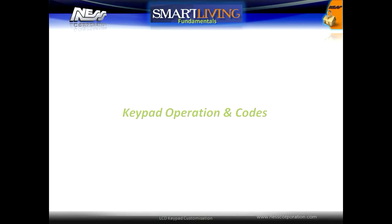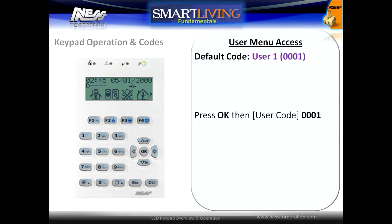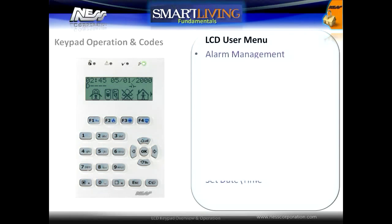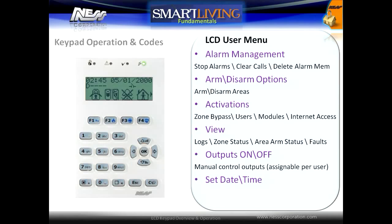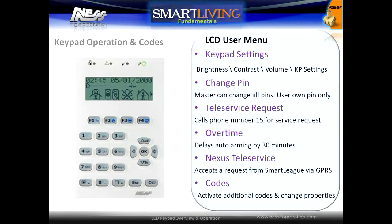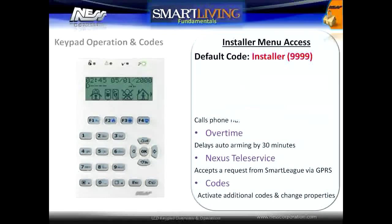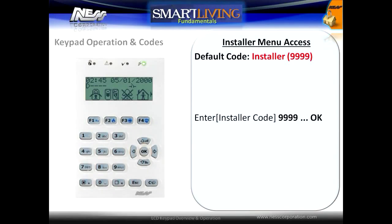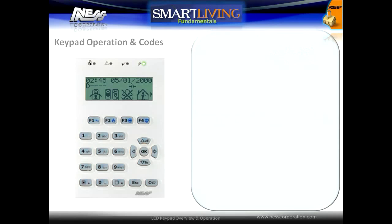Keypad operation and codes. To access the user menu, press OK followed by the user code. The default code is 0001. Users can be granted access to individual user menus and can also have individual menus programmed as shortcuts. The installer's menu is accessed by entering the installer's code then pressing OK. The default installer's code is 9999.